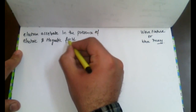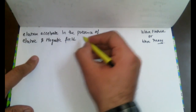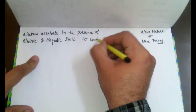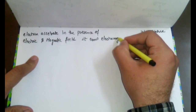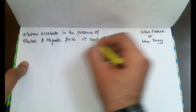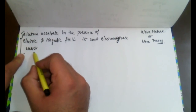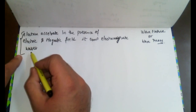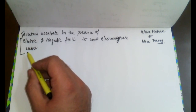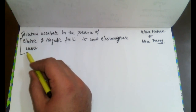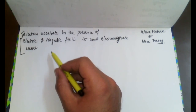When an electron accelerates in the presence of electric and magnetic field, it emits electromagnetic waves. This concept is used to operate mobile phones. If two persons are far apart and talking to each other, it is because electromagnetic waves keep on moving from one cell phone to another cell phone.